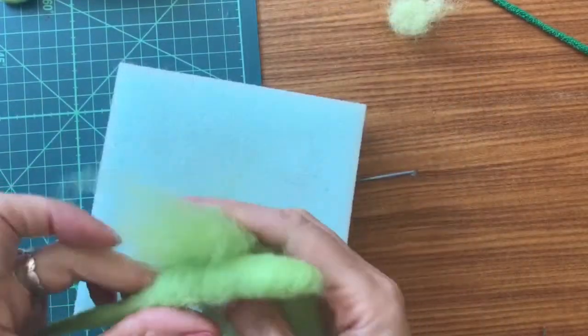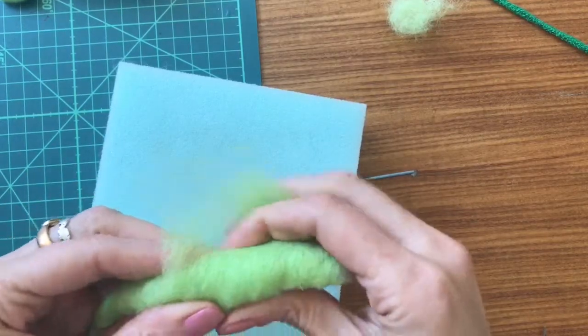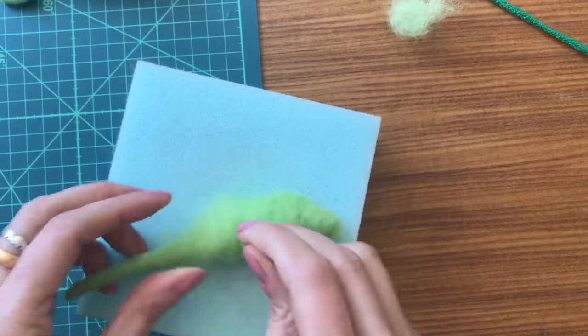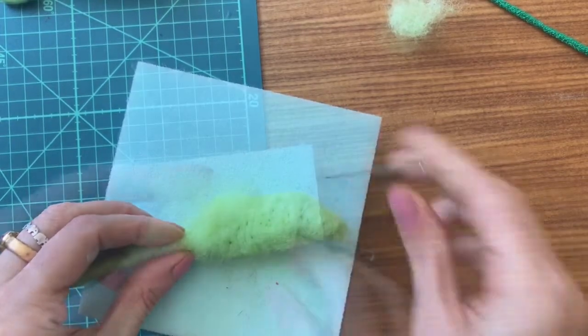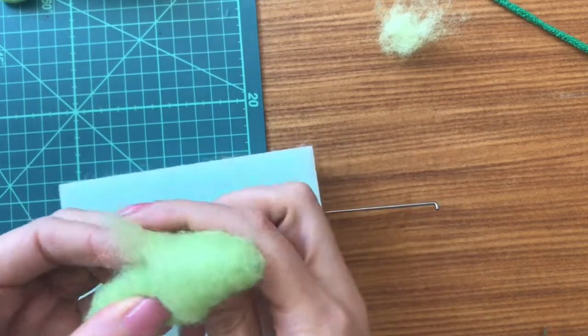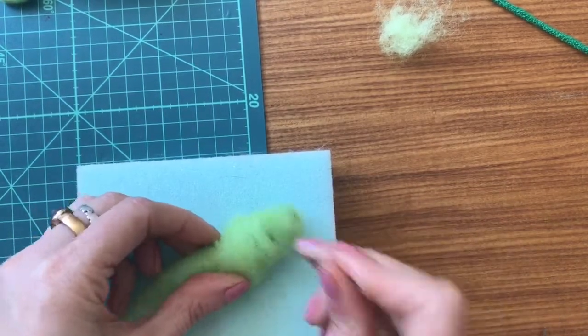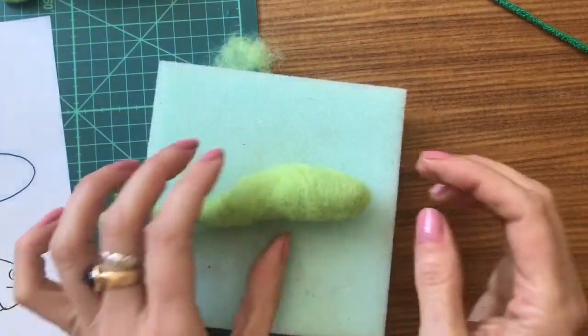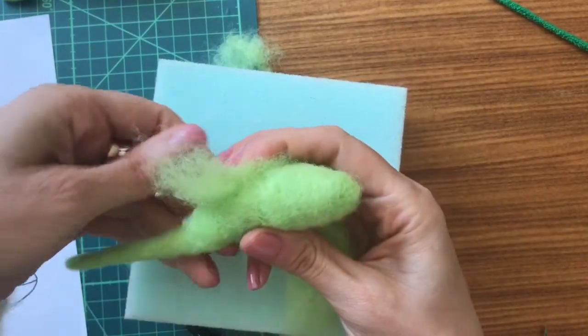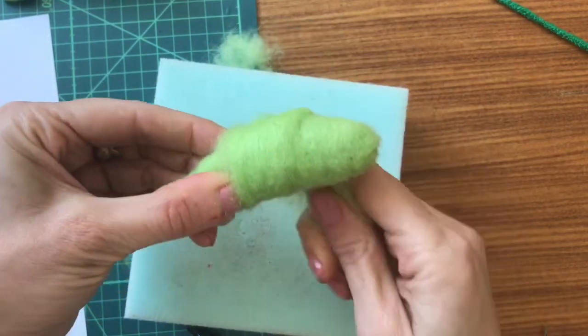Just keep adding more wool around the body and head area to build that up. You can see it's starting to take shape now. I'm just going to build him up a bit more, just on the body. Again, not going on the tail. I'm going to wrap that around.